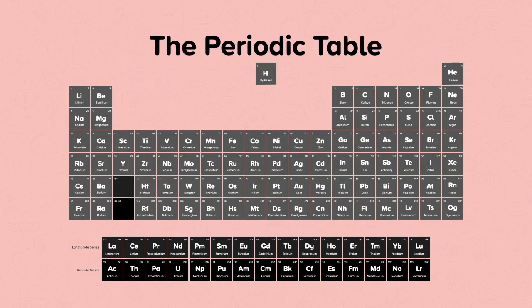On the periodic table the relative atomic mass is listed. This is the weighted average of all the isotopes of that element, and it takes into account how abundant each isotope is — that means how much there is of each type.